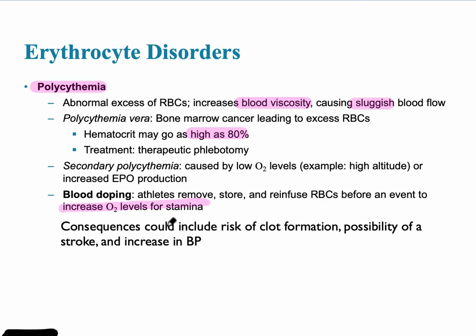There is secondary polycythemia, caused by low levels of oxygen at high altitude. This can also happen through blood doping, which some athletes use to carry much more oxygen than their competitors. However, because of the sluggish blood, there is a risk for clot formation, the possibility of stroke, or an increase in blood pressure.